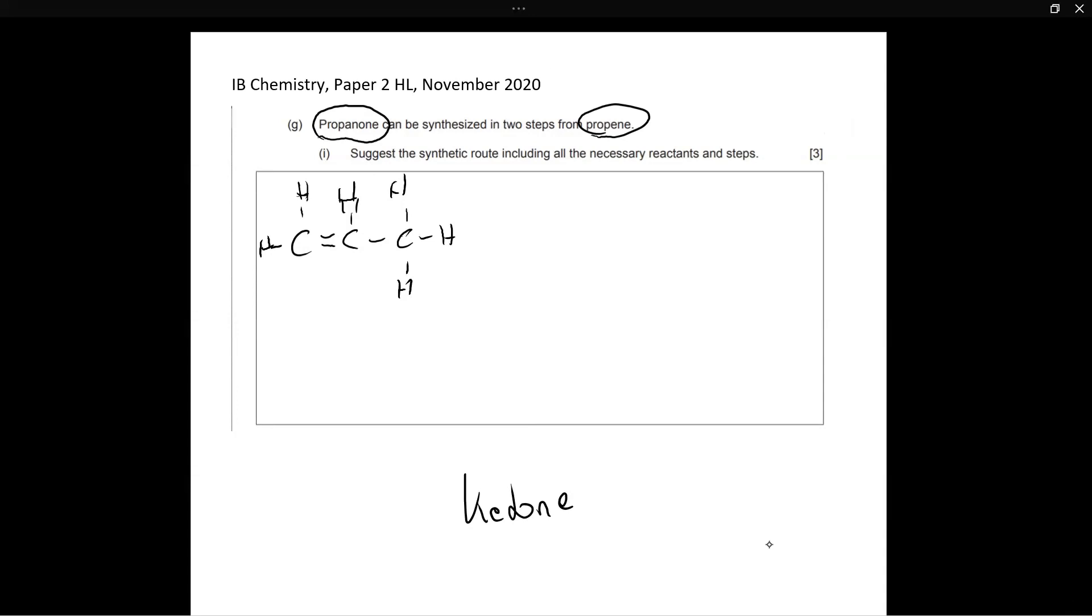Propanone is also commonly known as acetone. And if you are into cosmetics and makeup, you would know what acetone is because it is used in nail polish remover. It is used in paint removal. It is used in a variety of other industrial products. So it is a very important compound with a lot of industrial application. This is the structural formula of propanone. It looks something like this.